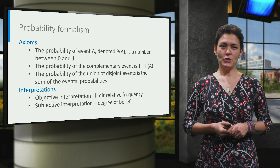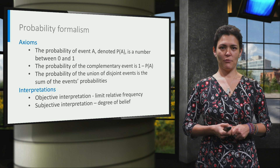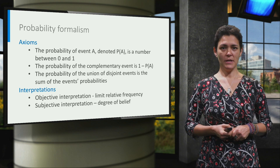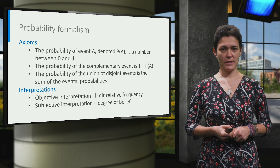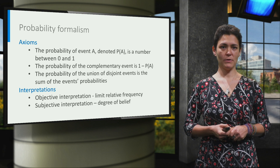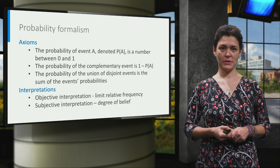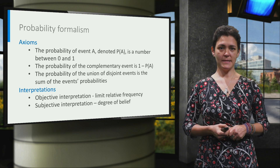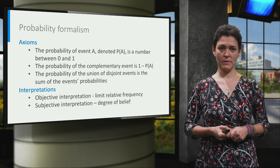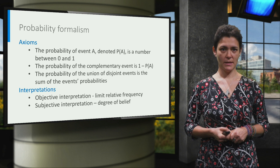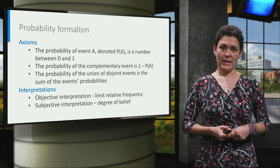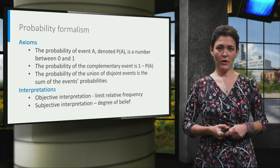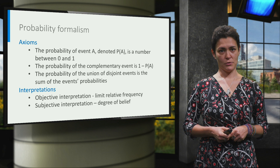Two of the most used and useful interpretations of probabilities are the objective or frequency interpretation and the subjective or Bayesian interpretation. In the frequency interpretation, probability is defined in terms of randomness, that is, as limiting relative frequency in random sequences. In the subjective interpretation, probability is defined in terms of the degree of belief of a rational individual.